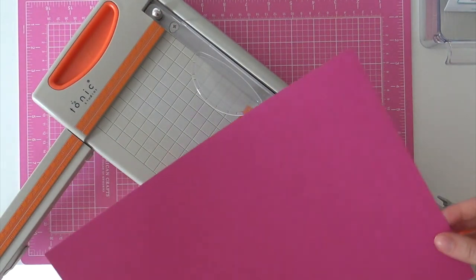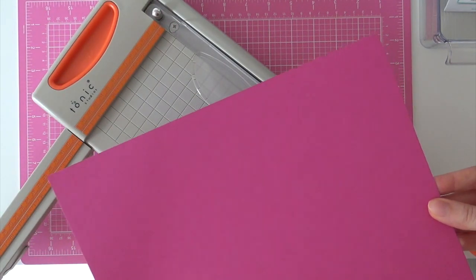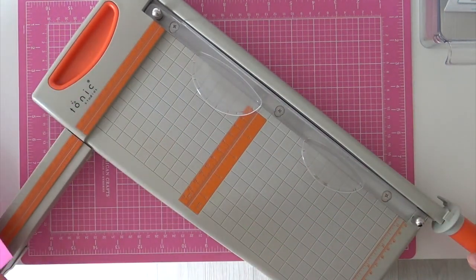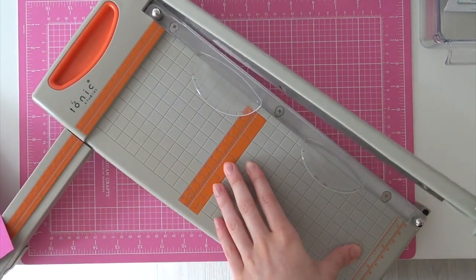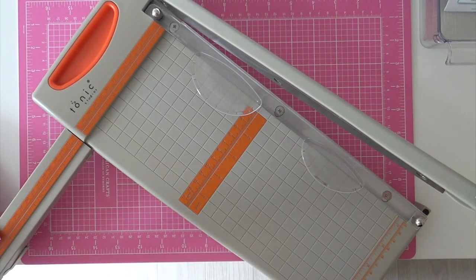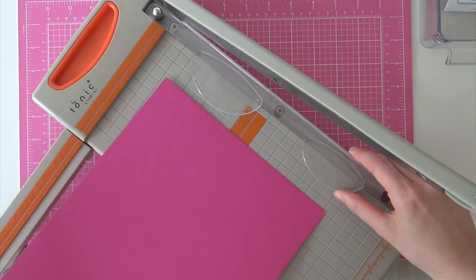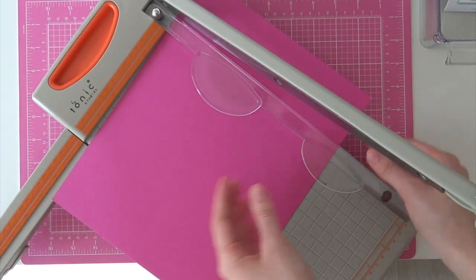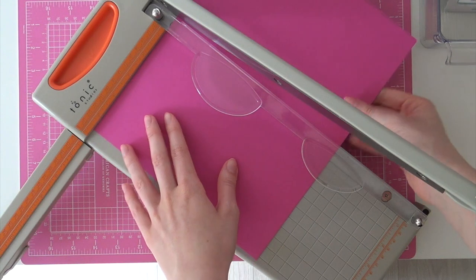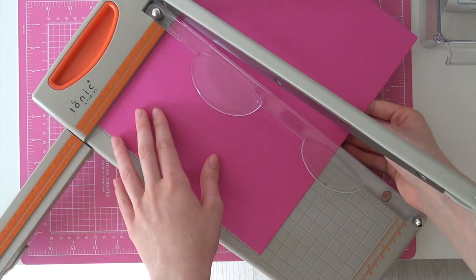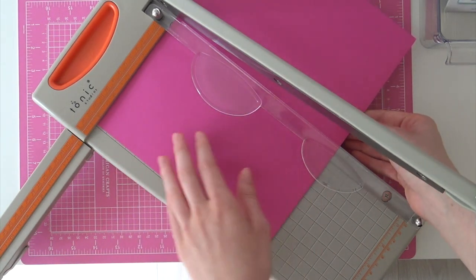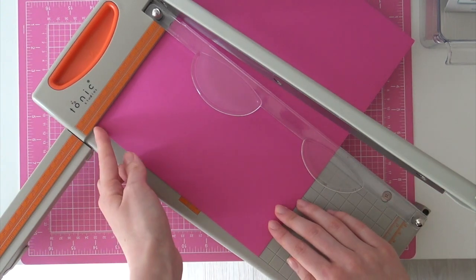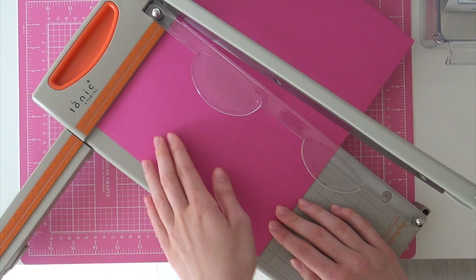Alrighty, so I'm going to show you how to cut a standard sized card with this machine. So first you just lift up the arm and then you're going to slide your paper underneath the safety guard or the finger guard. So you just slide it under very easily.